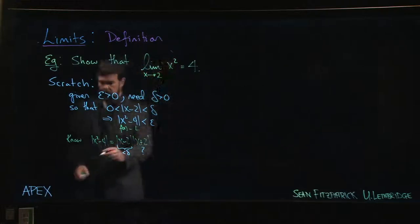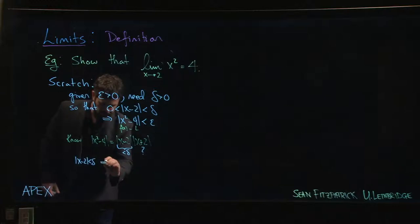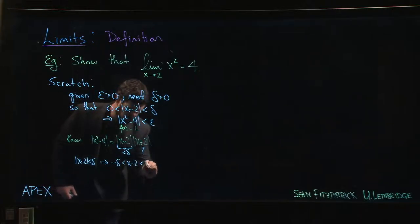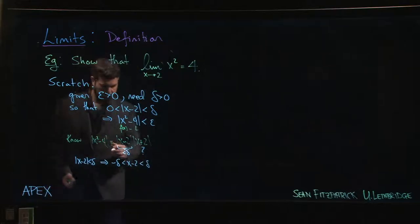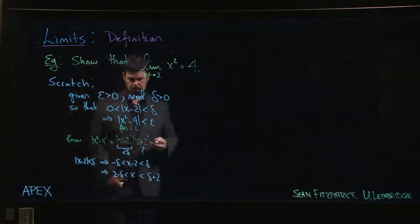But what you can do here is you can say, alright, remember that if |x - 2| is less than delta, that's going to imply that x - 2 is between -delta and delta. And so that in turn implies that 2 - delta is less than x less than delta + 2.